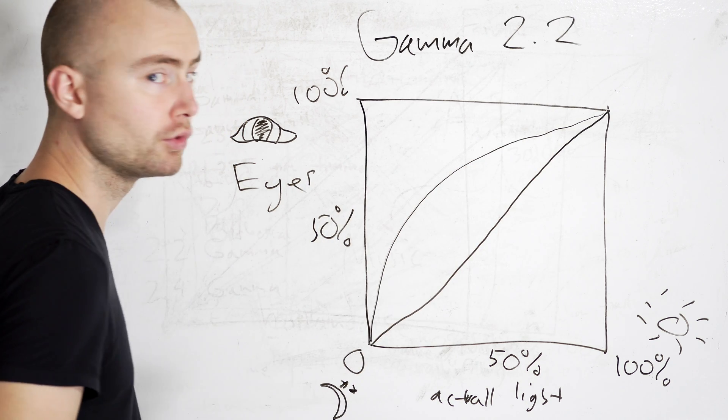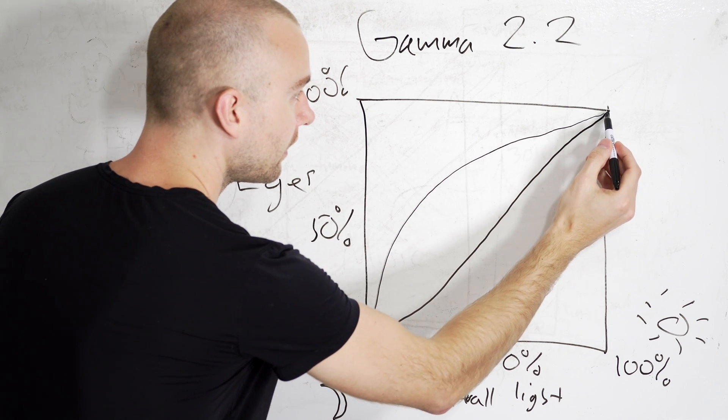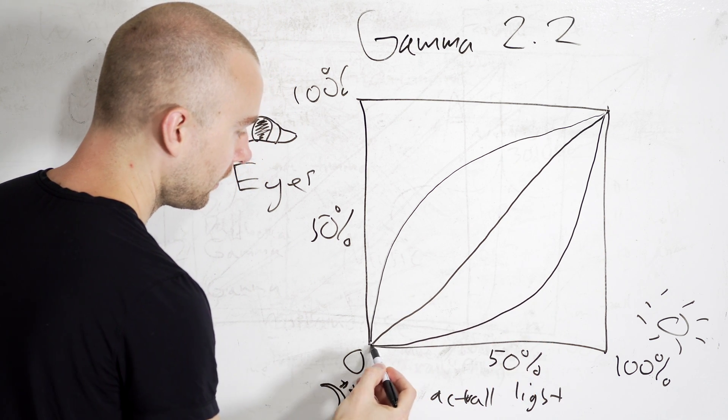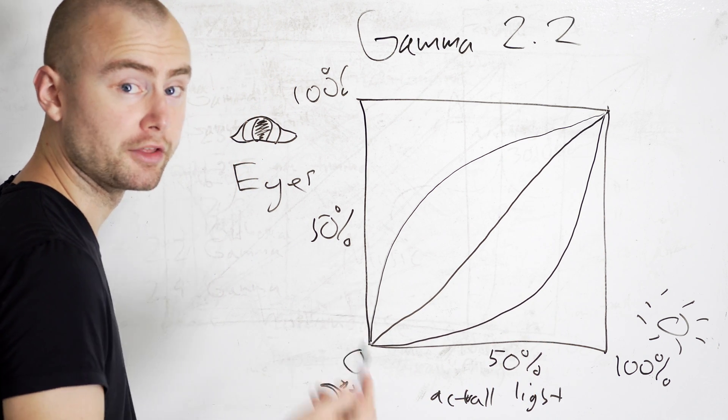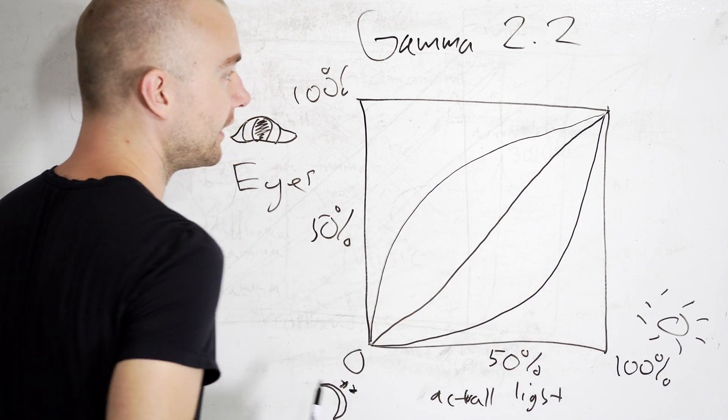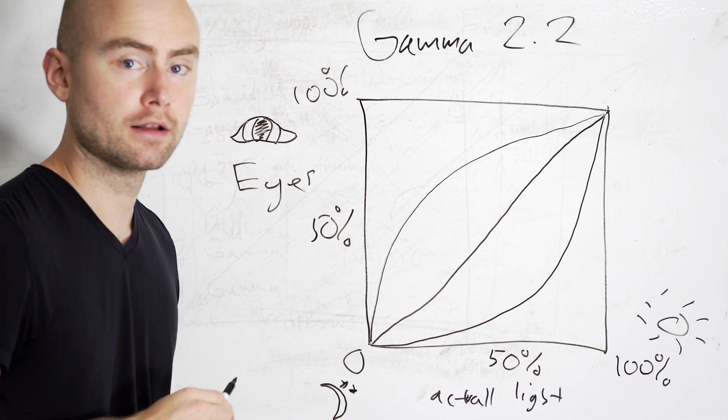So, gamma 2.2, what it's doing is it's reading that and it's making the display also logarithmic, but the other way. So it balances out how we see it and again makes that linear line a correct, well-exposed looking image.